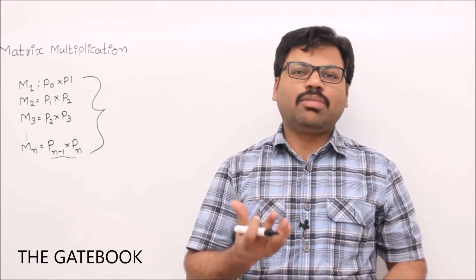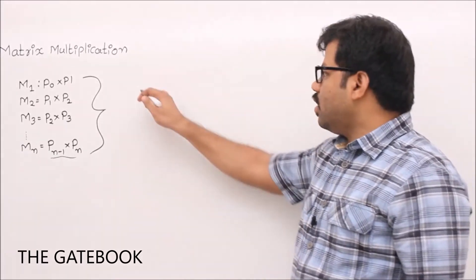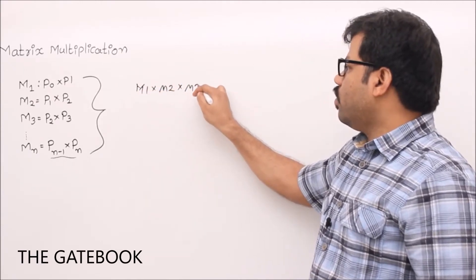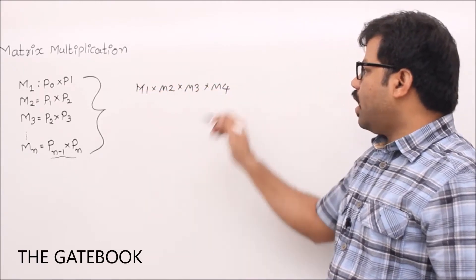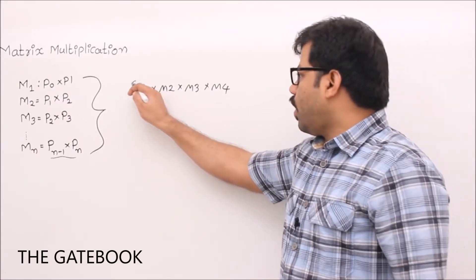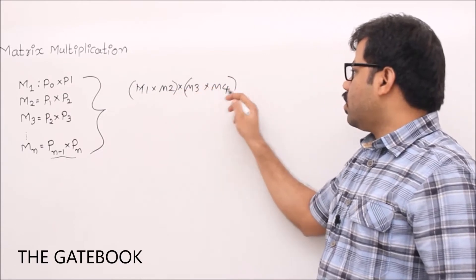We'll see the brute force technique and try to see the problems. After that we'll go to recurrence relation. For example, you have matrices m1, m2, m3, m4. How many different ways can we multiply them? Let's do brute force. In brute force we try all possibilities - try this combination and find the cost, try this combination m1 × m2 × m3 × m4.